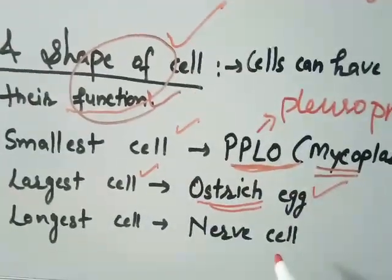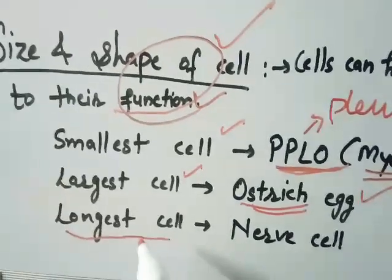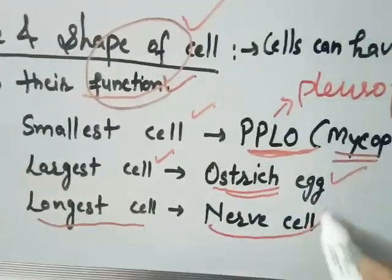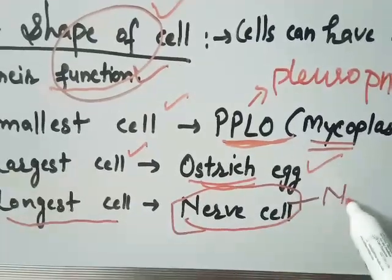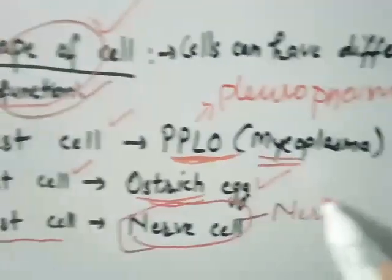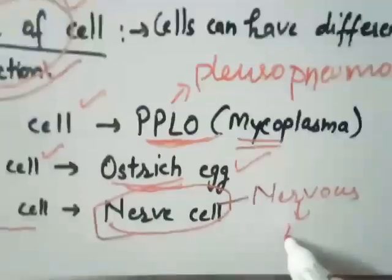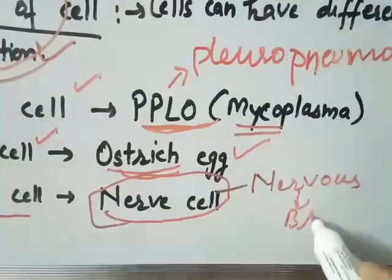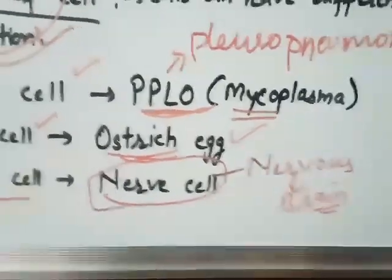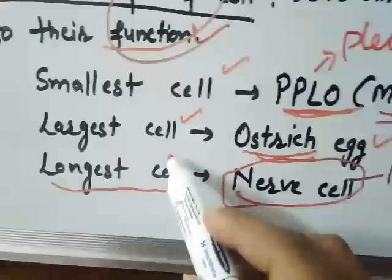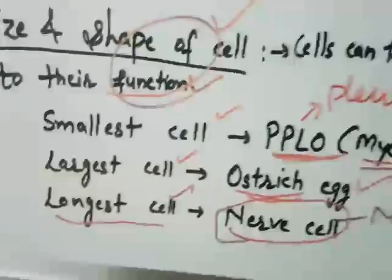The largest cell is the ostrich egg. The longest cell — which is the longest in size — is our nerve cell, found in the nervous system, in our brain. Since messages must travel long distances in the brain, the nerve cell is the longest cell.